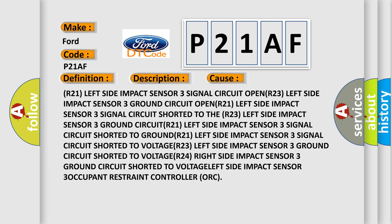R21 left side impact sensor 3 signal circuit OPEN; R23 left side impact sensor 3 ground circuit OPEN; R21 left side impact sensor 3 signal circuit SHORTED to the R23 left side impact sensor 3 ground circuit; R21 left side impact sensor 3 signal circuit SHORTED to GROUND; R21 left side impact sensor 3 signal circuit SHORTED to VOLTAGE; R23 left side impact sensor 3 ground circuit SHORTED to VOLTAGE.